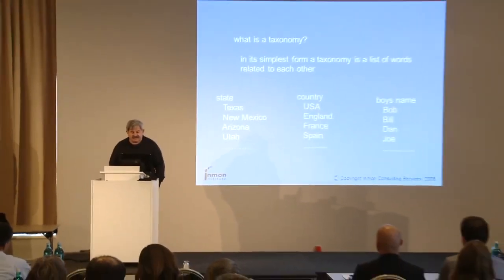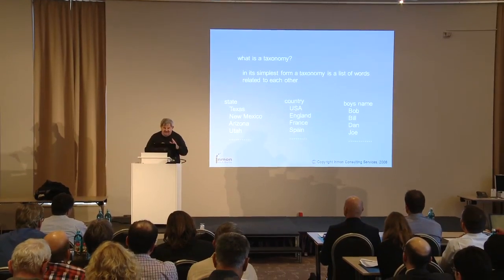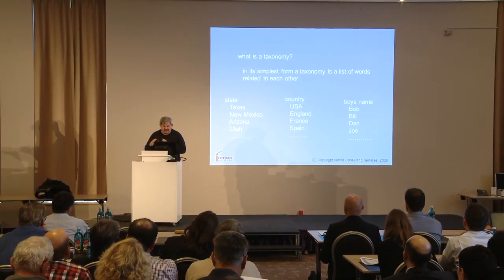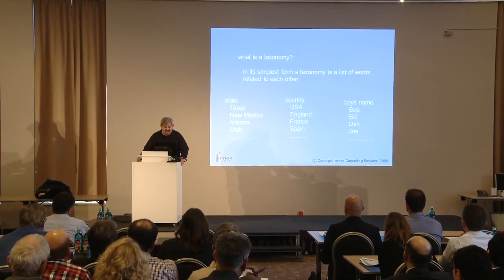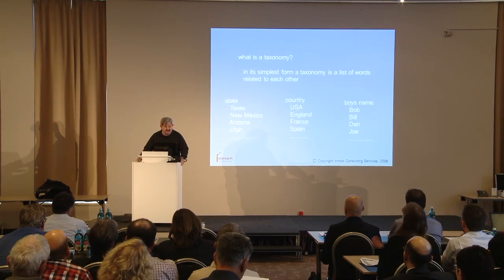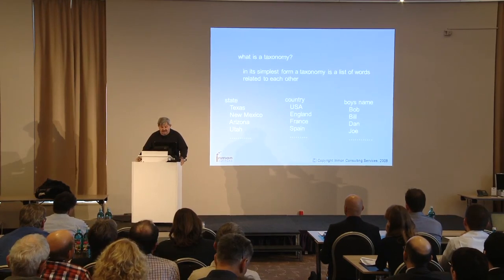So what in the world is a taxonomy? The simplest definition is that a taxonomy is nothing more than a list of related words. Let's take some simple examples. In the United States we have states called Texas, New Mexico, Arizona, and Utah. There are countries in the world: the USA, Germany, France, Spain, the UK, and so forth.